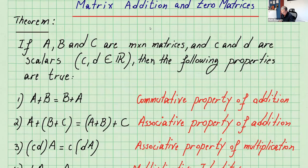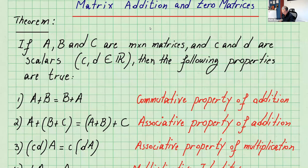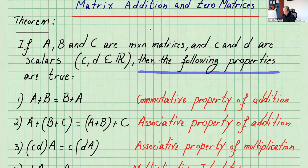The theorem states: if A, B, and C are m by n matrices, and c and d are scalars — remember, these are real numbers — then we can have the following properties of addition and scalar multiplication of matrices.